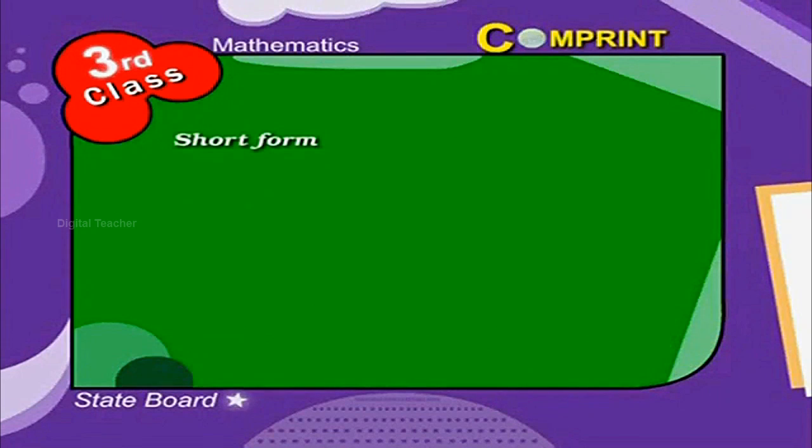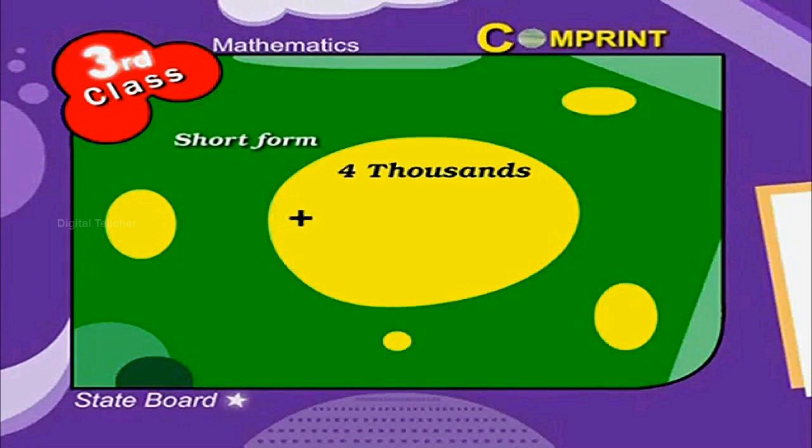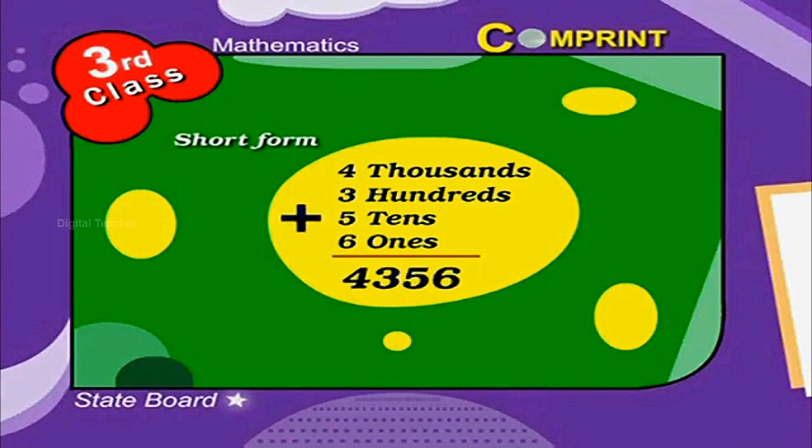Short form. When we add the expanded numbers, we get the short form of a number. 4 thousands plus 3 hundreds plus 5 tens plus 6 ones. Together, we get 4356.